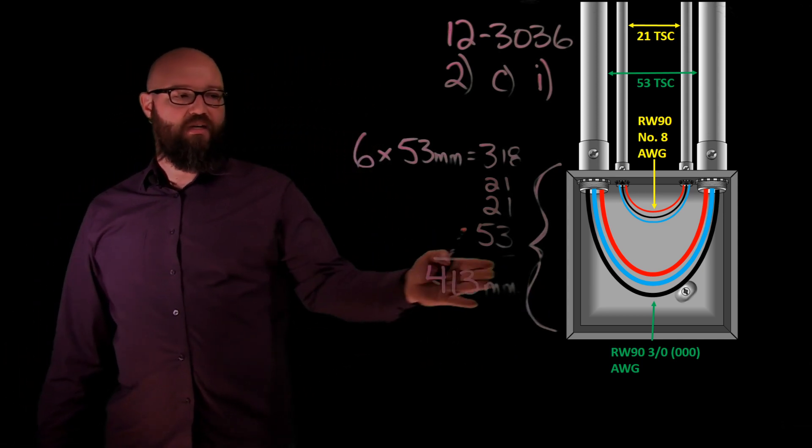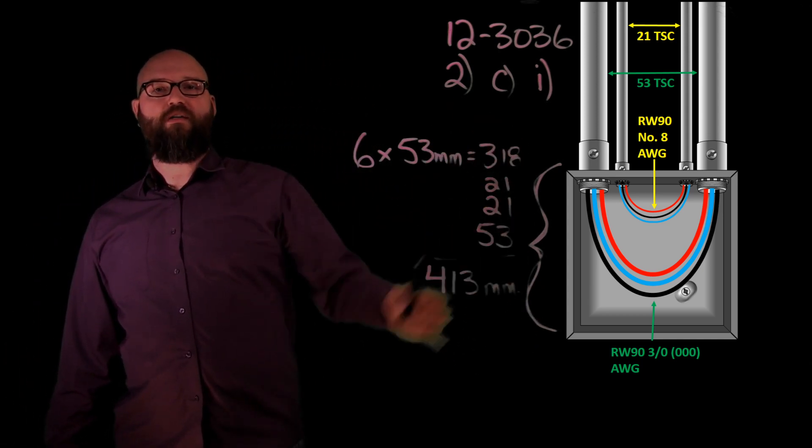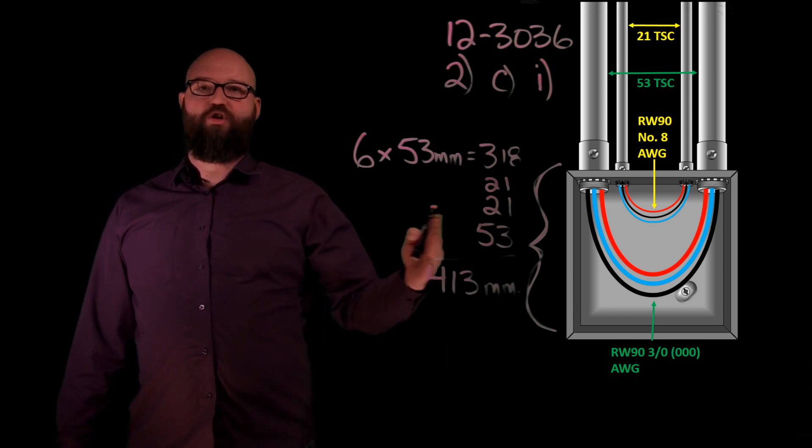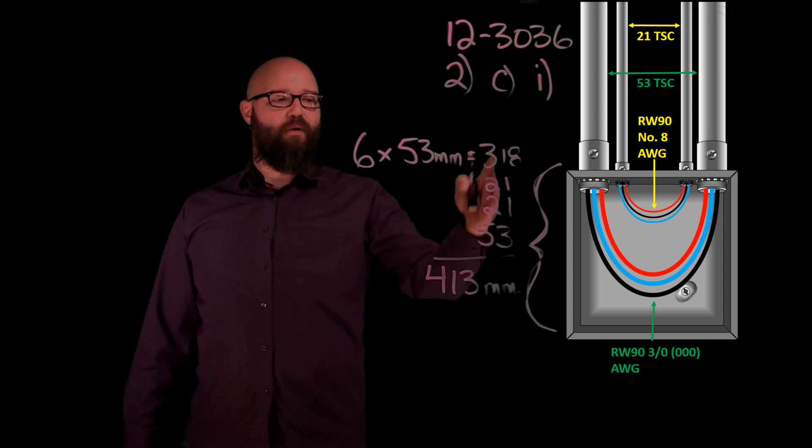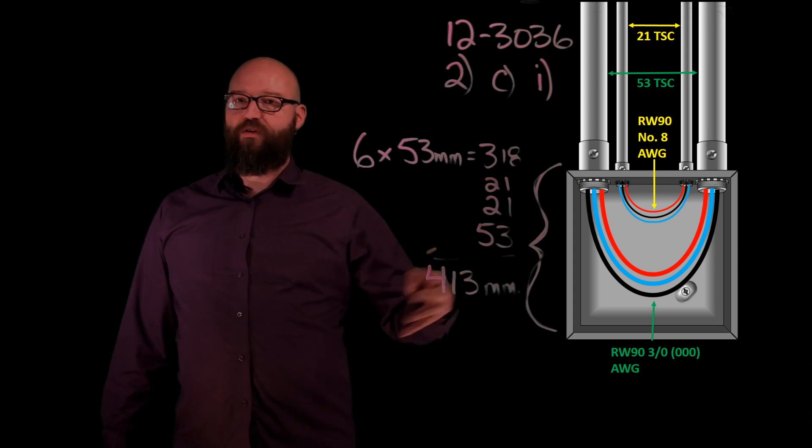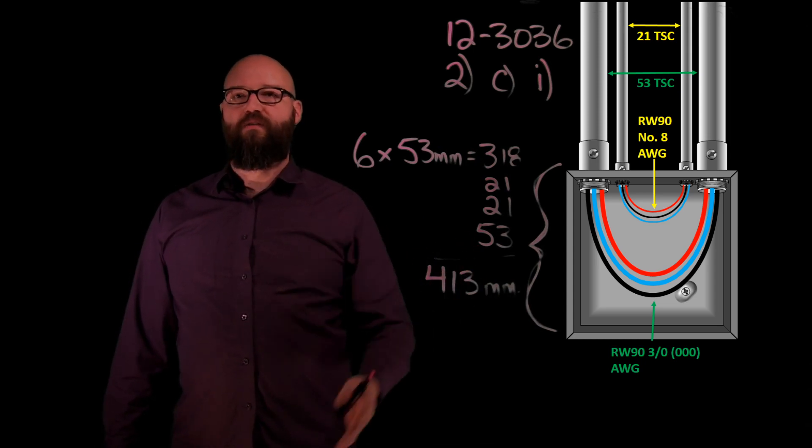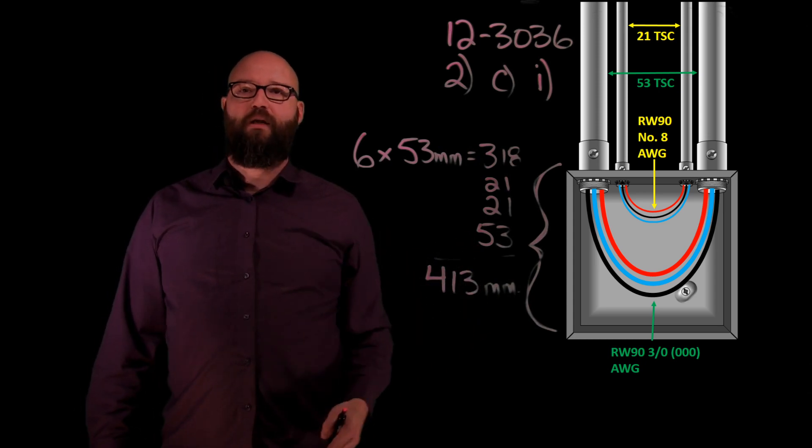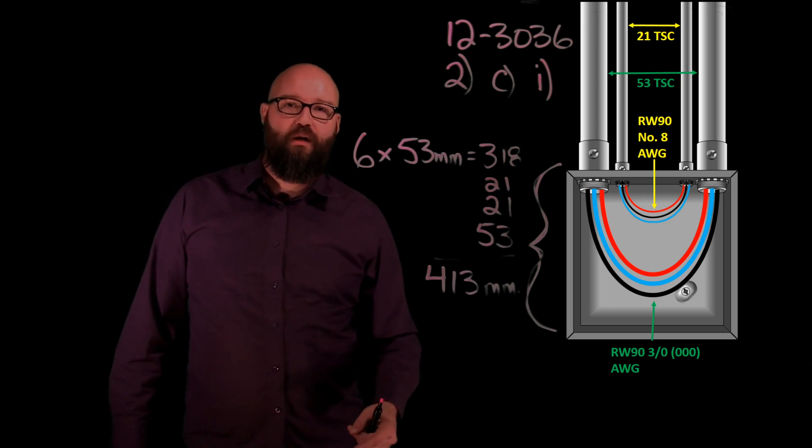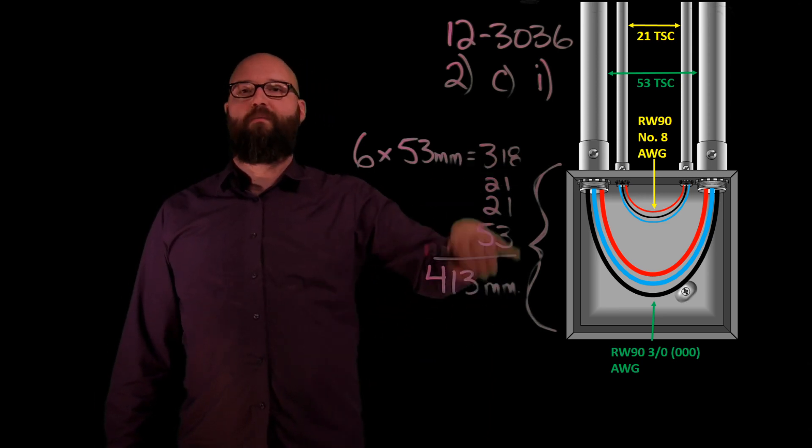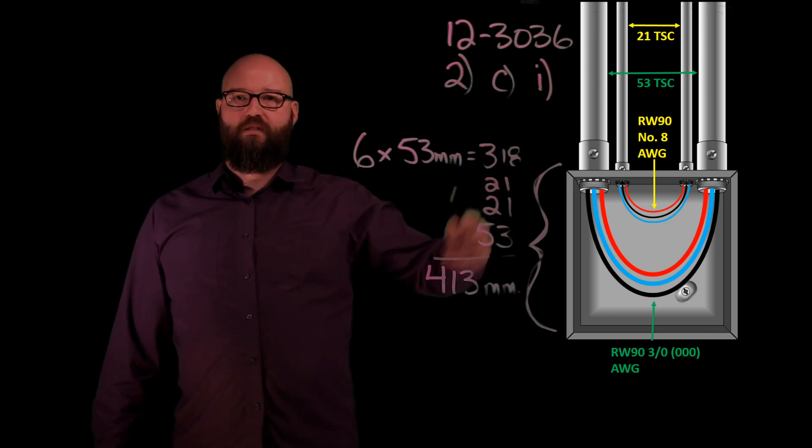That right there is the dimension of this side of the box. If I observe that, I'm ensuring that I have the proper bend radius of my conductors. If we were using a square box, the minimum dimensions of this box would be 413 millimeters by 413 millimeters. We just know that that's the minimum dimension based off of the size of these conduits.